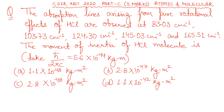The question is: the absorption lines arising from pure rotational spectra of HCl are observed at 83.03 cm⁻¹, 103.73 cm⁻¹, 124.30 cm⁻¹, 145.03 cm⁻¹, and 165.51 cm⁻¹. You need to find the moment of inertia of the HCl molecule. If you have prepared the pure rotational spectra topic from atomic and molecular physics, you will find this question very easy after knowing the relevant formulae and concepts.